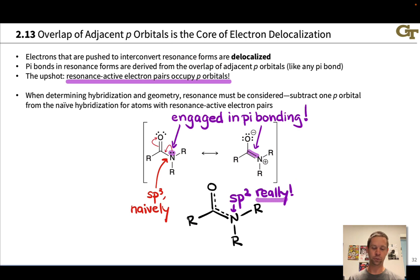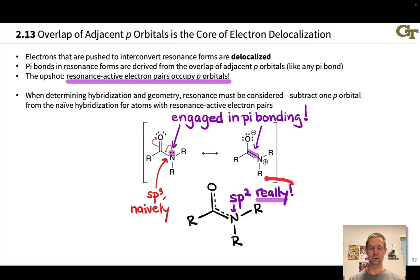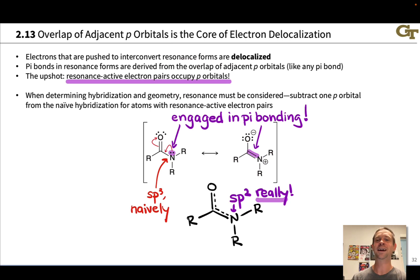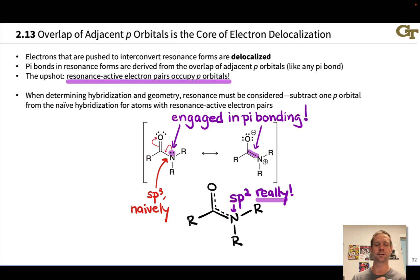In the resonance hybrid, which shows a partial pi bond between carbon and nitrogen, we reach the same conclusion: this nitrogen really only has three electron pair domains — three sigma bonds and one pi bond — so the hybridization is sp2. As a rule when resonance is involved: for every resonance-active atom, subtract one p orbital from the naive hybridization when a lone pair is actually engaged in pi bonding, as suggested by the resonance forms.